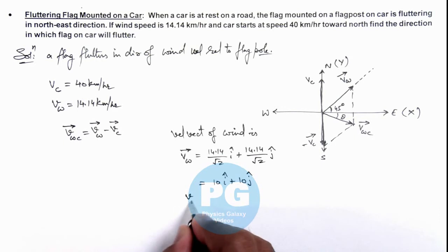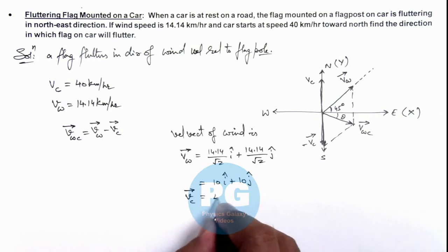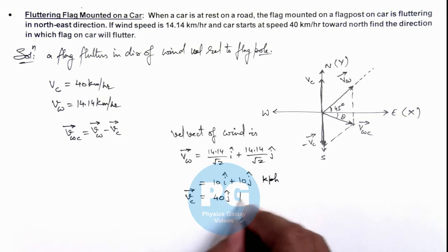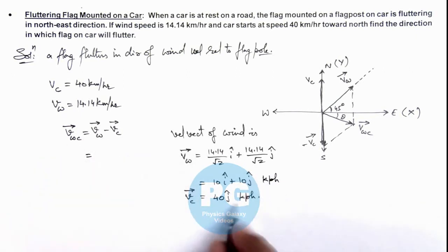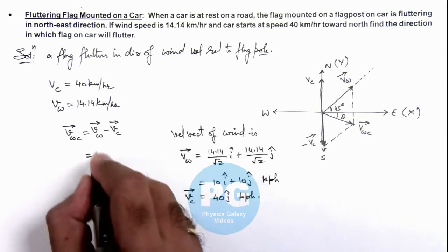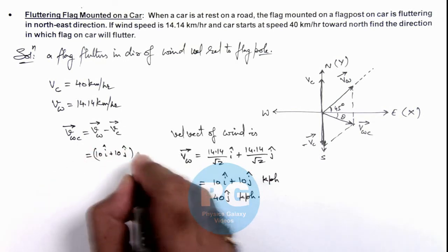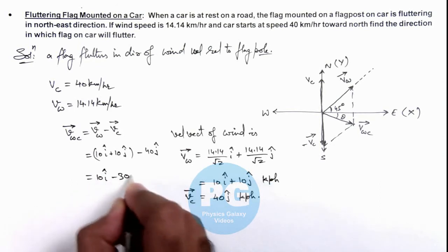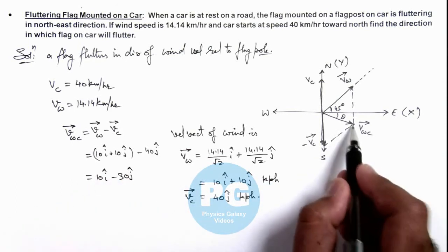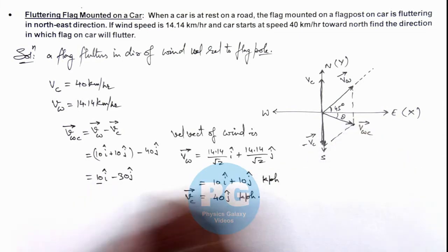The velocity of the car, which is traveling due north, is 40 ĵ kilometers per hour. Calculating the velocity of wind with respect to the car by substituting the values: V_w/c = (10 î + 10 ĵ) minus 40 ĵ, which gives 10 î minus 30 ĵ. So the x-component of the wind velocity with respect to car is 10, and the y-component is minus 30.